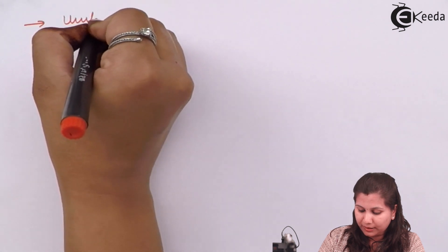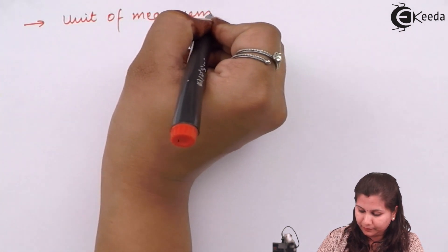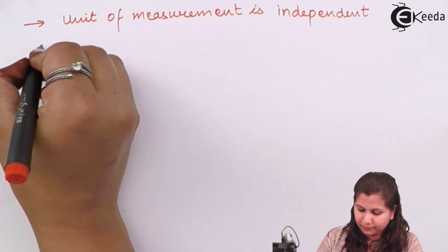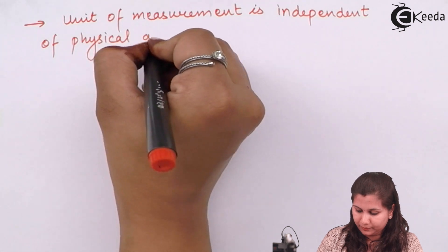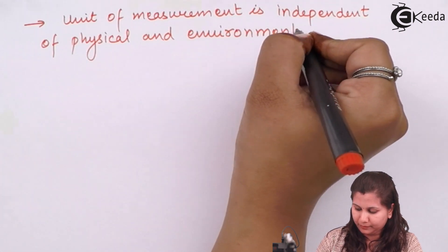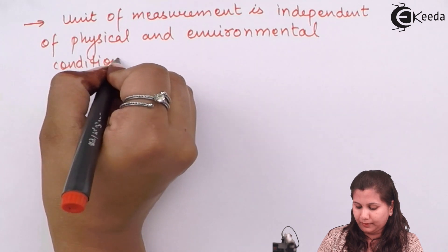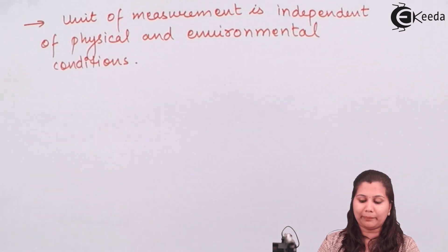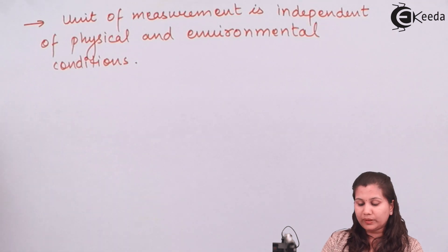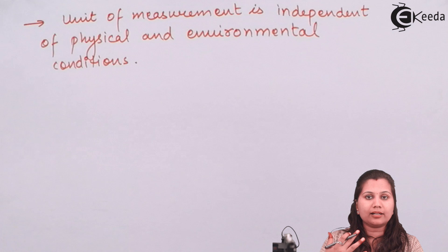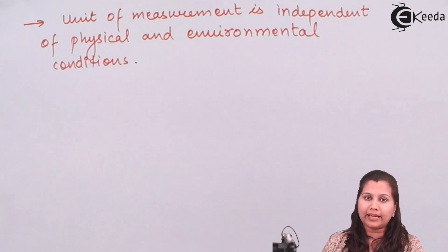These units of measurement are independent of environmental conditions — there will be no effect on them. So we can say that units of measurement are independent of physical and environmental conditions. These units are of two types: one is the fundamental unit and the other is the derived unit.